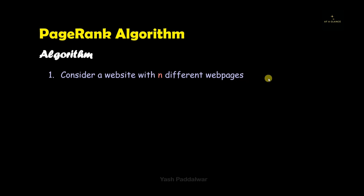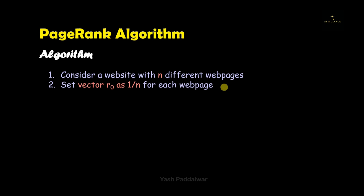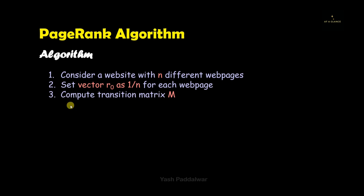Let's consider that we have a website which contains n different web pages. The total number of web pages will be stored in the variable n. The first step is to set a vector r0, called the initial vector. The vector r0 will be a matrix of the order n×1, where n is the total number of nodes or web pages, and it stores the page scores of every single node. Since initially we are not aware which web page is of higher relevance, we assign the value 1/n to all nodes. For example, if the network has three nodes, r0 will contain the value 1/3 for every single node.